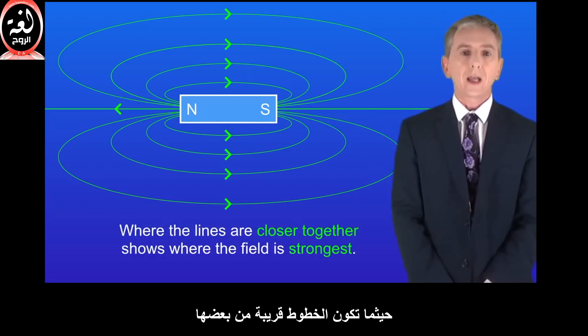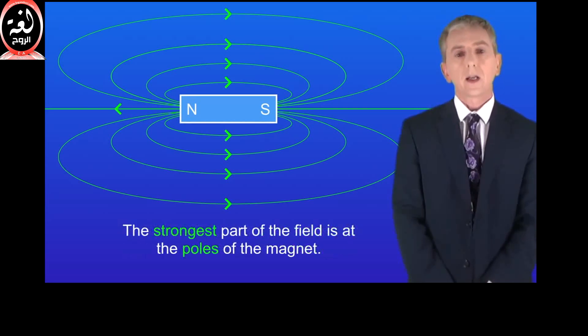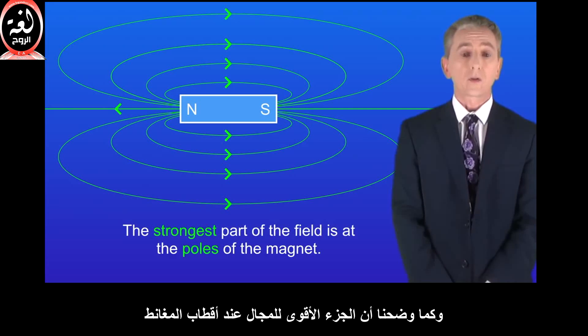Where the lines are closer together shows where the magnetic field is strongest, and as we said before, the strongest part of the field is at the poles of the magnet.